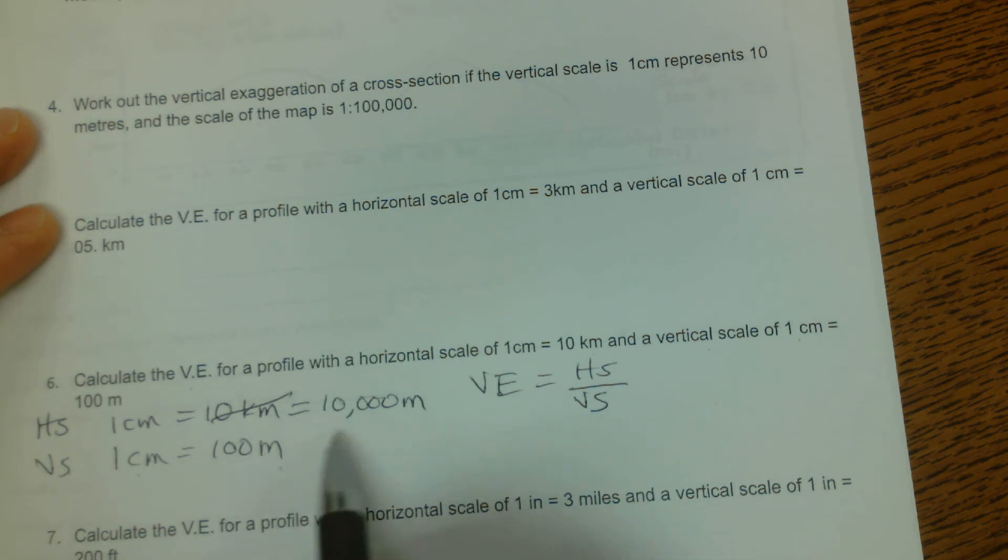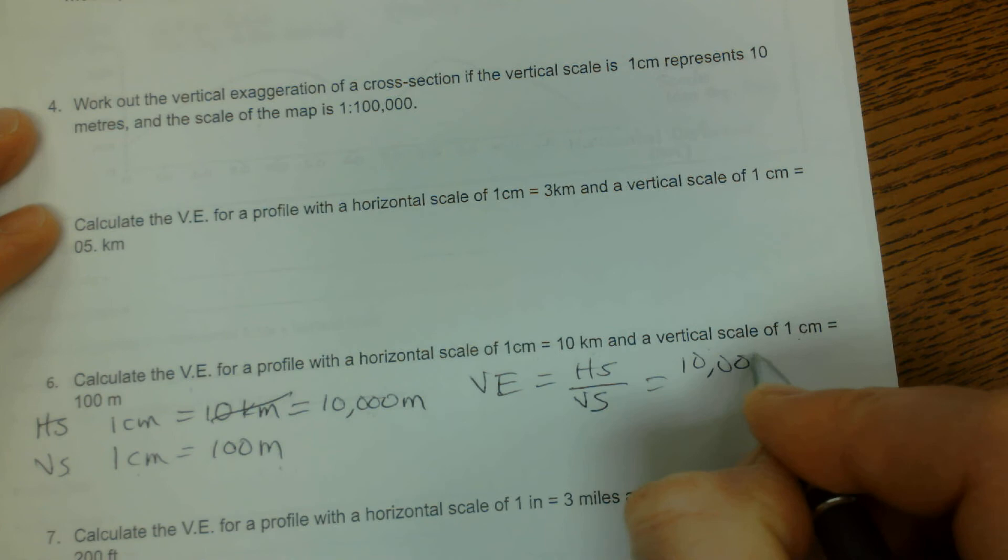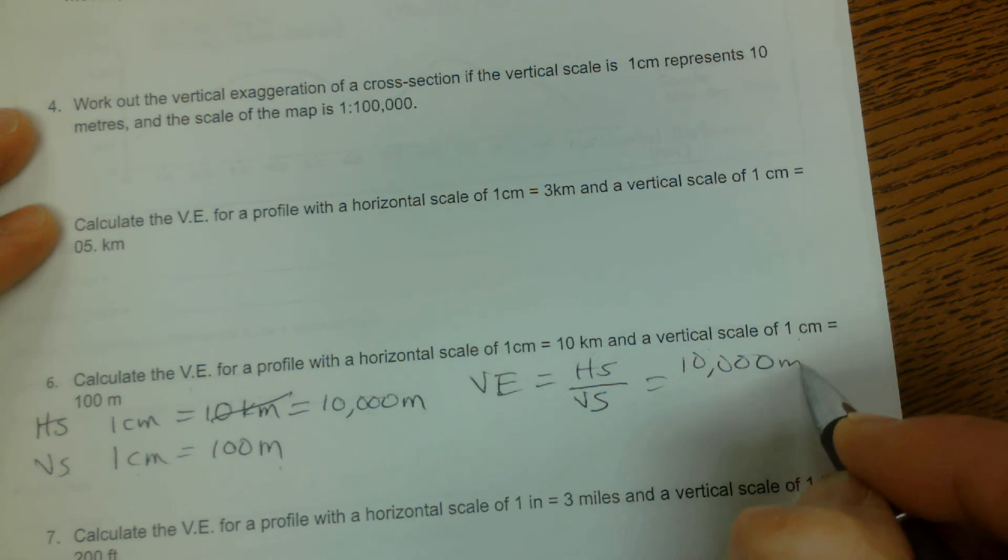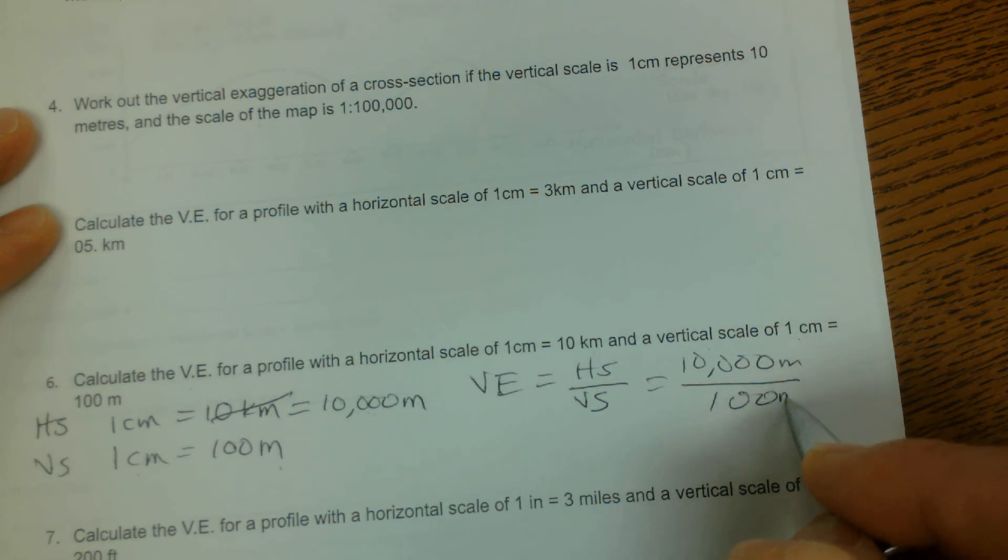And really, all I need to do is take the second number. So this is going to be 10,000 meters divided by 100 meters.